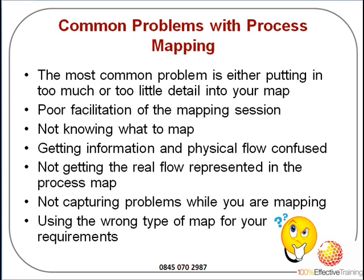The other key problem we normally see when doing process mapping is not mapping the truth — not mapping exactly what happens. We ask managers, or as managers we assume we know what happens in the process. The key people are those who actually do the process themselves, who we should go and talk to in order to really understand what happens and where the real problems are. Lastly, we normally have problems where we try and use the wrong symbols or the wrong type of map, and therefore we can't identify the right process or we don't capture problems as we're going through.